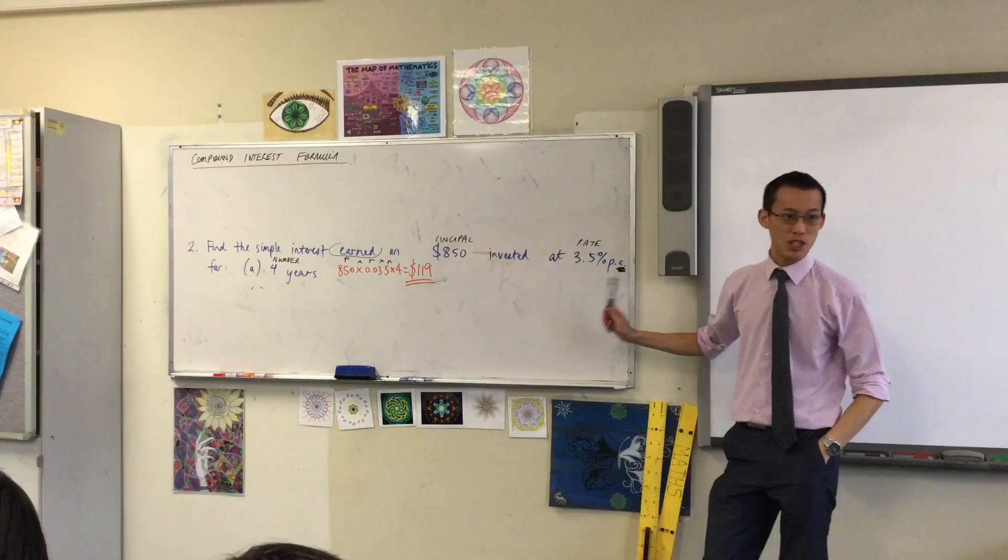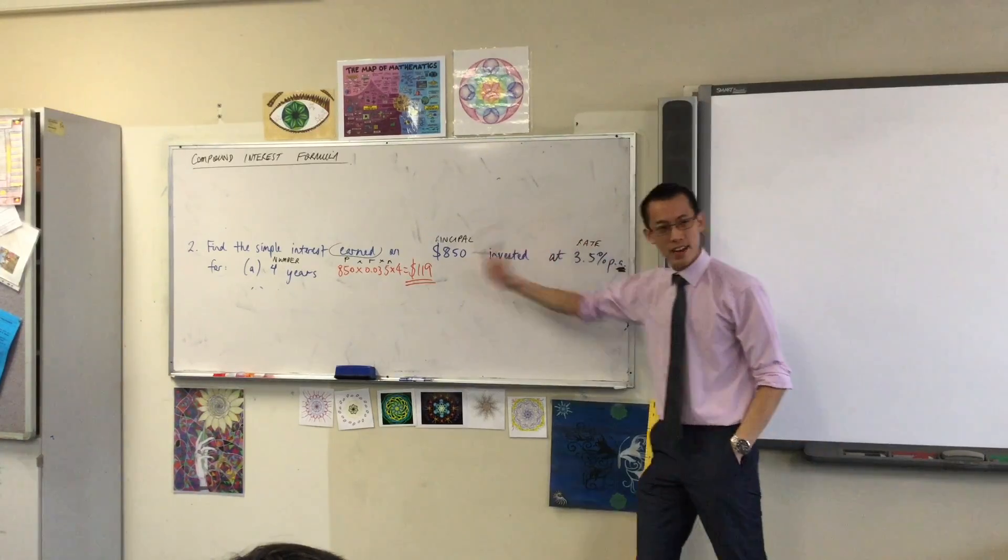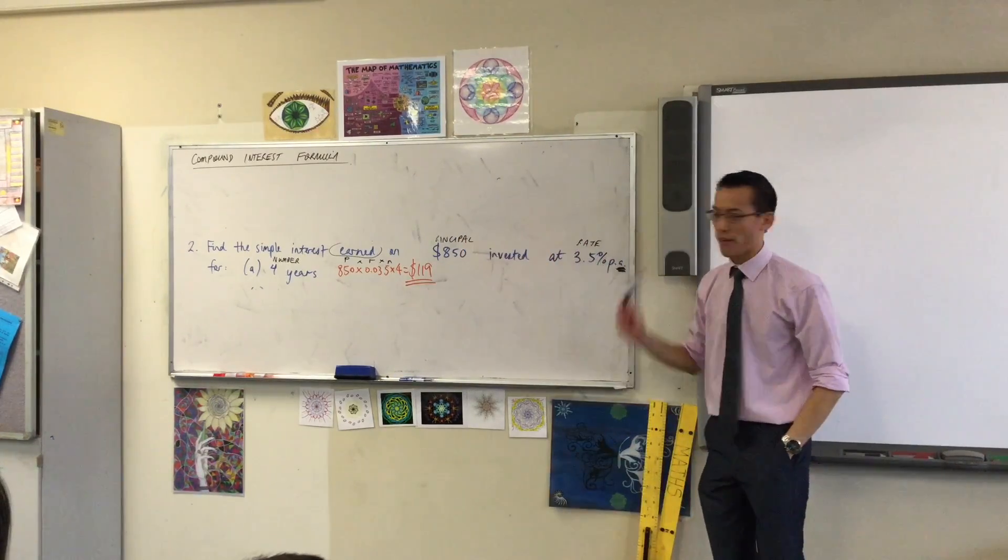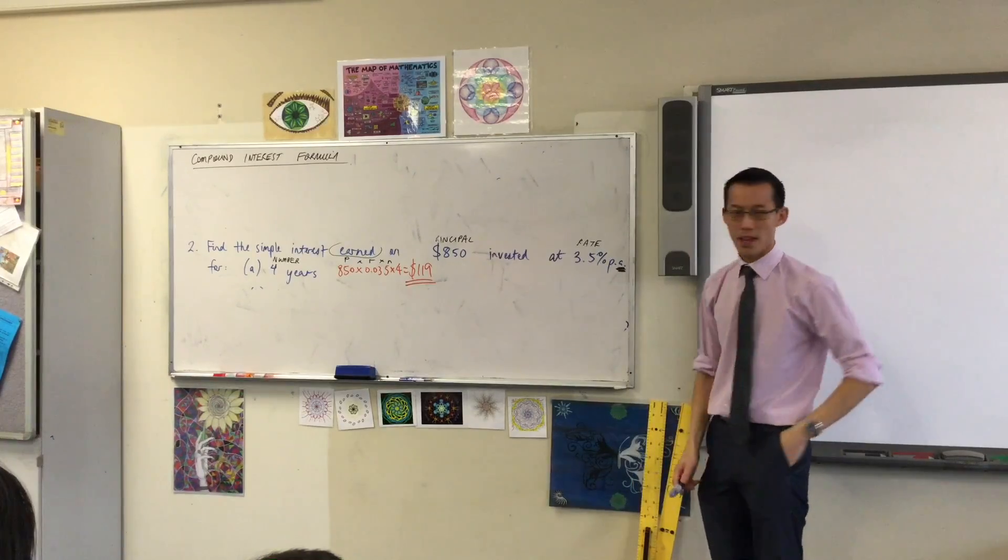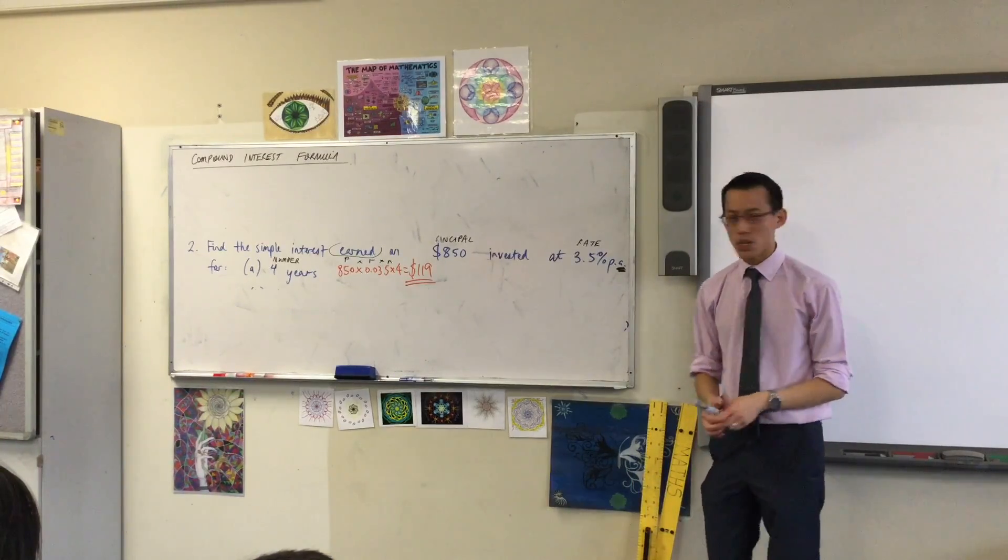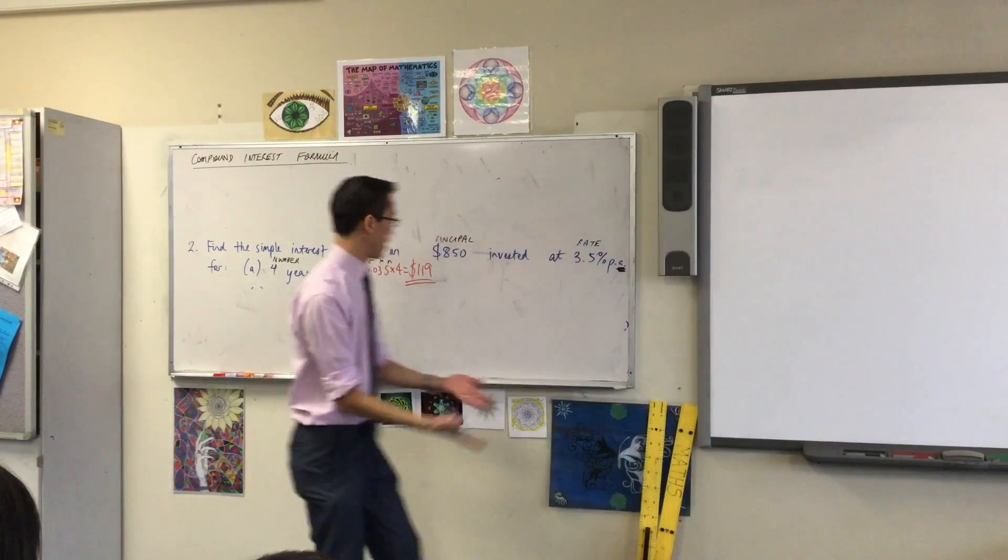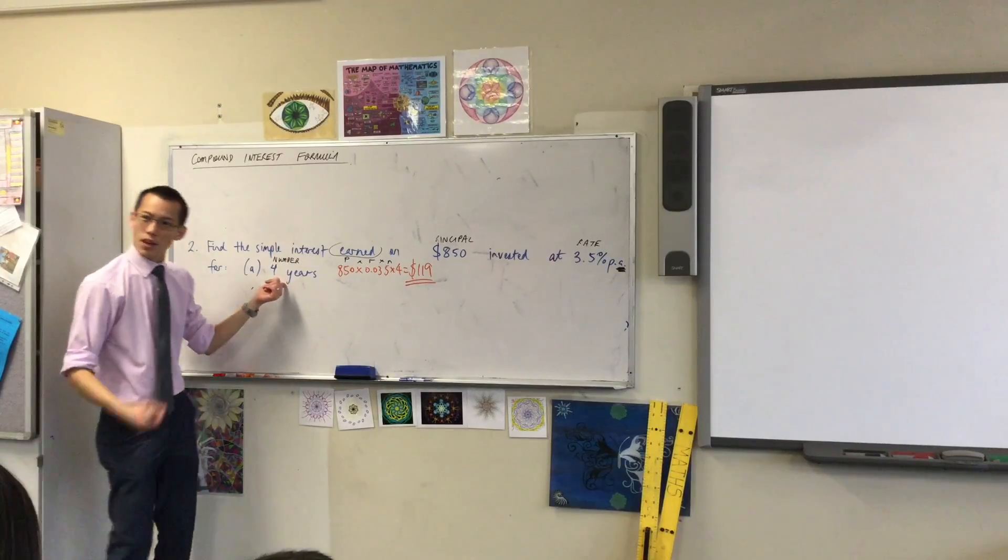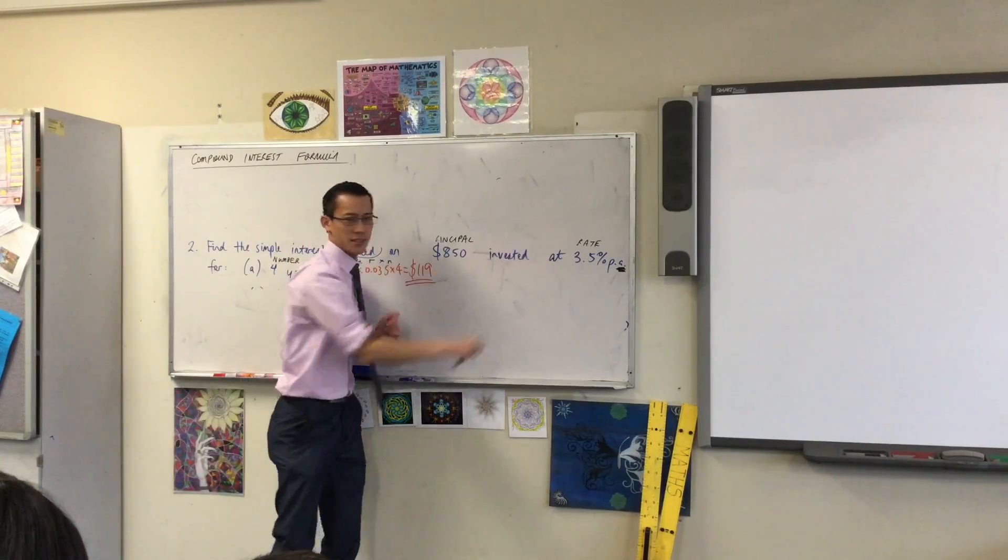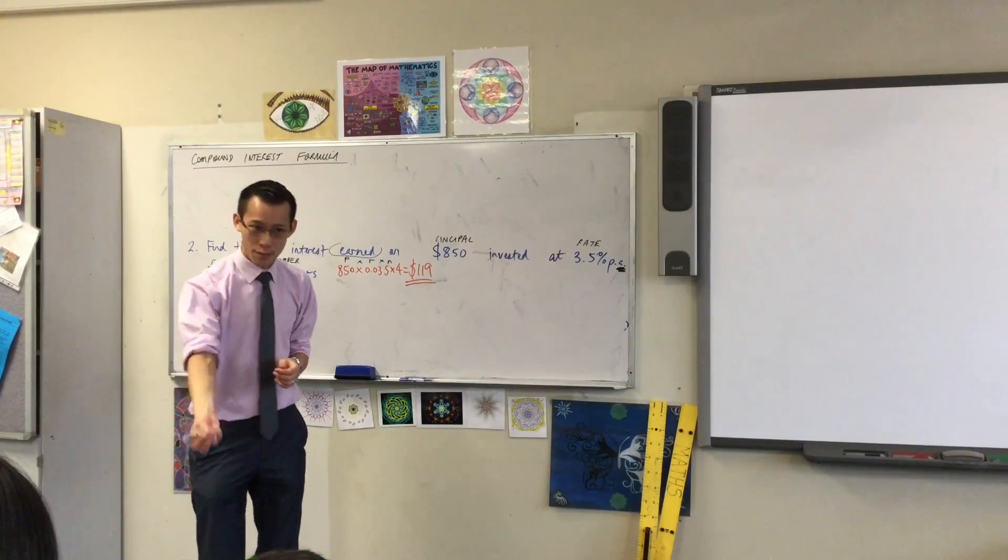Look back at this question you did just now about $850 and 3.5 percent per annum for that number of years. This is simple interest, which means that each year that you've got it in there, and you're doing it four times, you get that much interest and it's the same every single time.